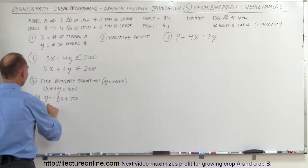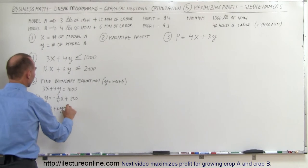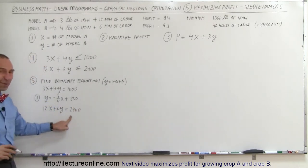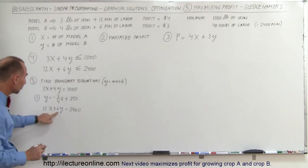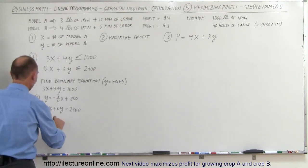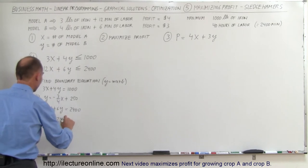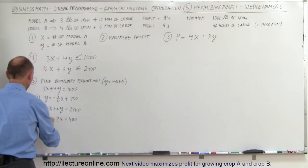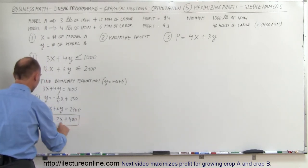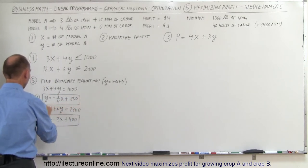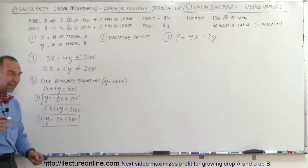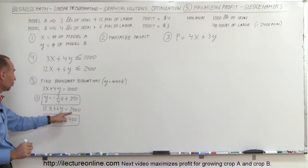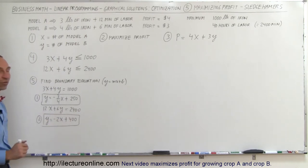We do the same with the second equation: 12X plus 6Y equals 2,400. We move the 12X to the other side — it becomes minus 12X — divide both sides by 6, so we get Y equals minus 2X plus 400. Those are the two equations defining our boundaries.